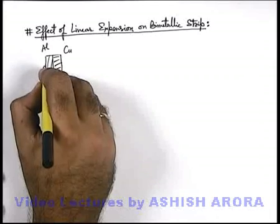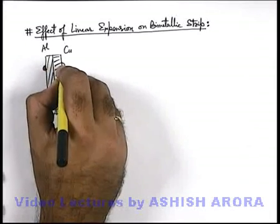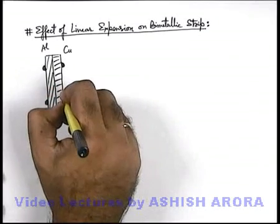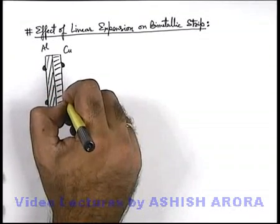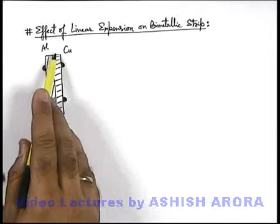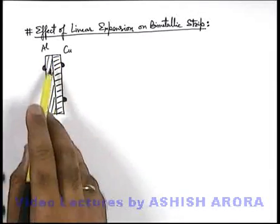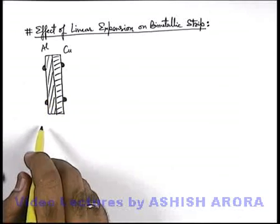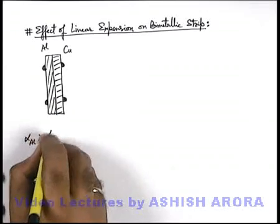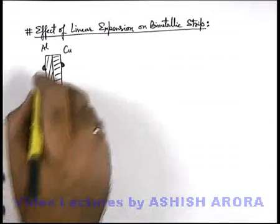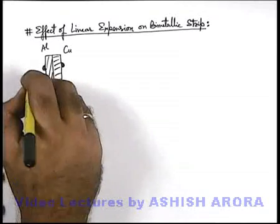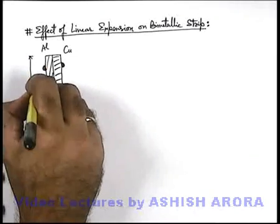These are riveted and using these rivets they are always combined to each other — they are not allowed to be detached. We know that alpha of aluminium is more than alpha of copper, and in the initial situation the length of this combined rod is L₀.